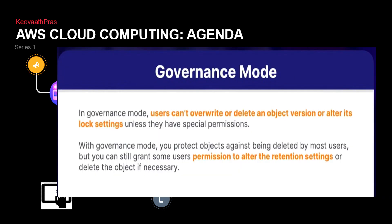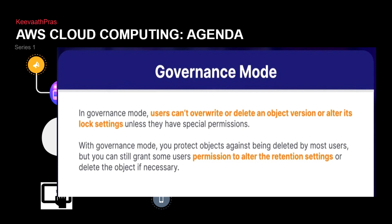Now let's get into governance mode. In governance mode, users can't overwrite or delete an object or alter its lock settings unless they have special permissions. Governance basically means only certain people have the capability to govern. You can't overwrite, can't delete, or even alter the lock settings. With governance mode you protect objects against being deleted by most users, but you can still grant some users the permission to alter the retention settings or delete the object if necessary.